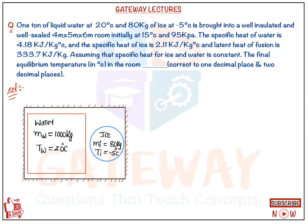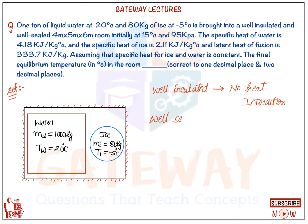Let us solve this question. It is a well-sealed and well-insulated room. Well-insulated means there are no heat interactions. Well-sealed means there is no mass interaction and also no work interaction — no mass and no work interactions.